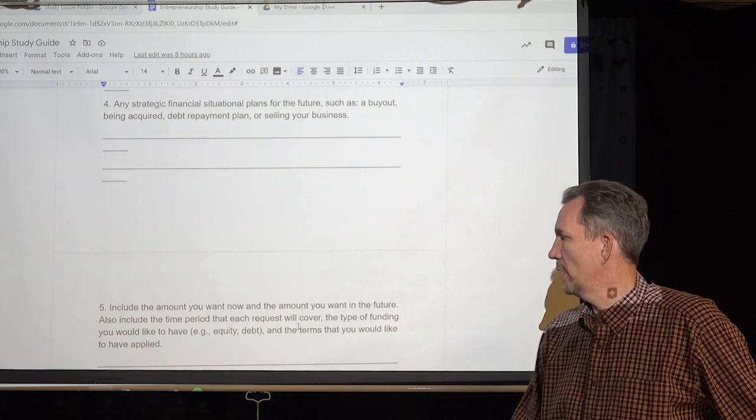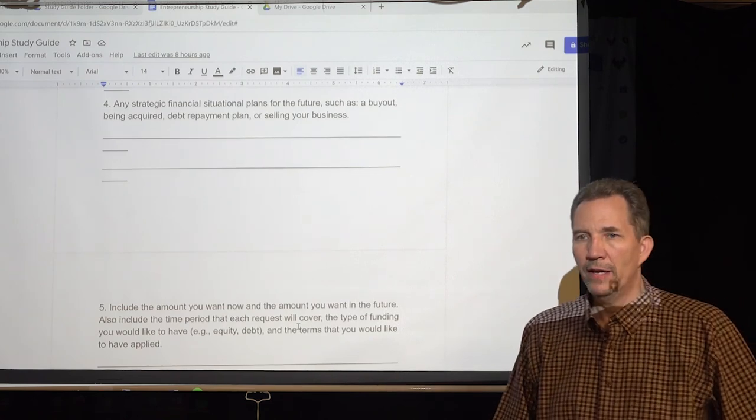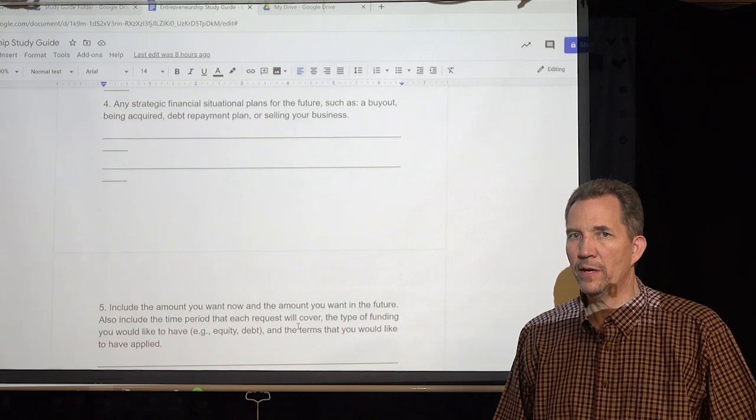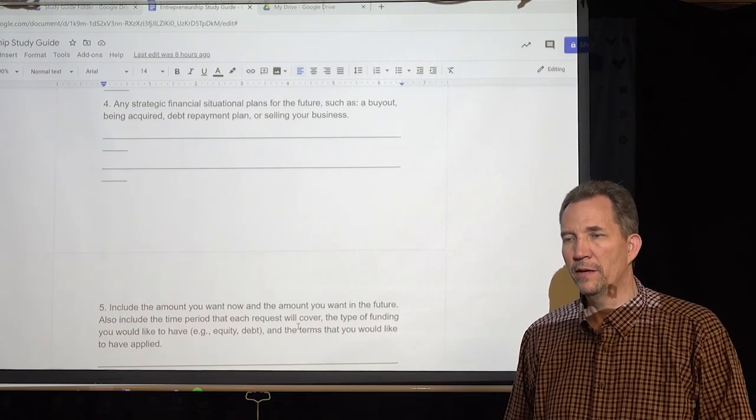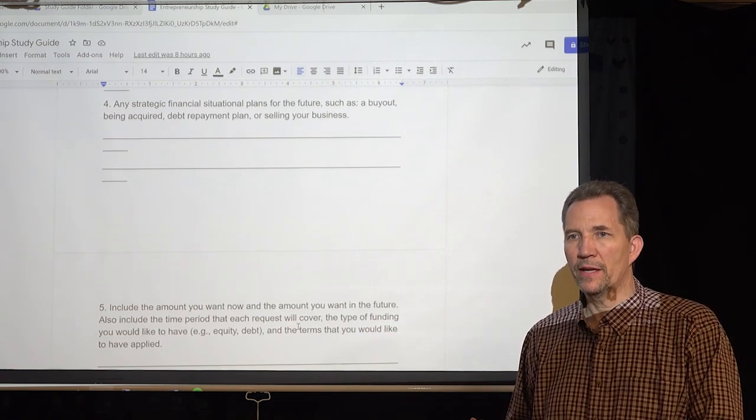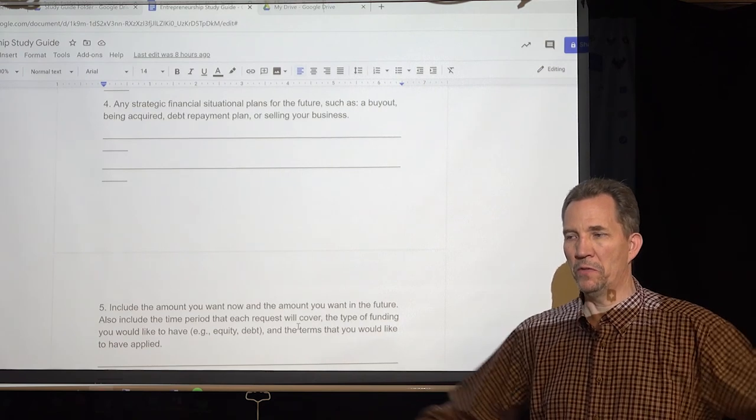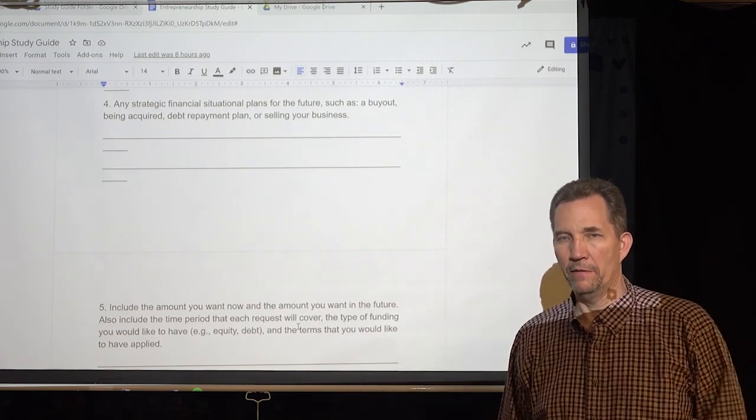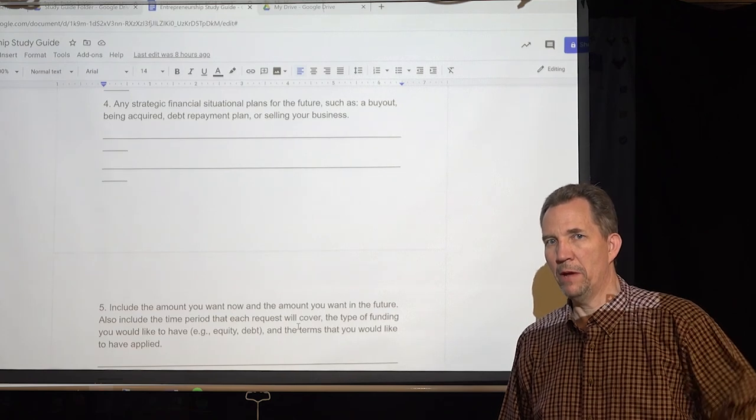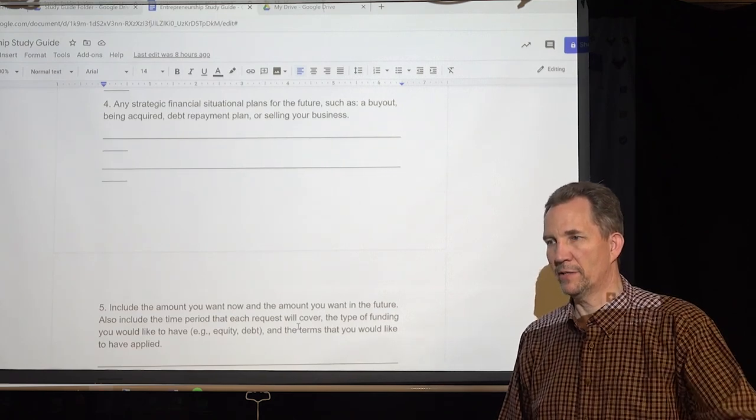All right. And then it says in the terms you would like to have applied. So you would write down how you want to have it. It's not uncommon at all for someone to say, okay, yeah, I need your money. But one of the terms is that I have an option in there to buy you out so I can own the company myself again